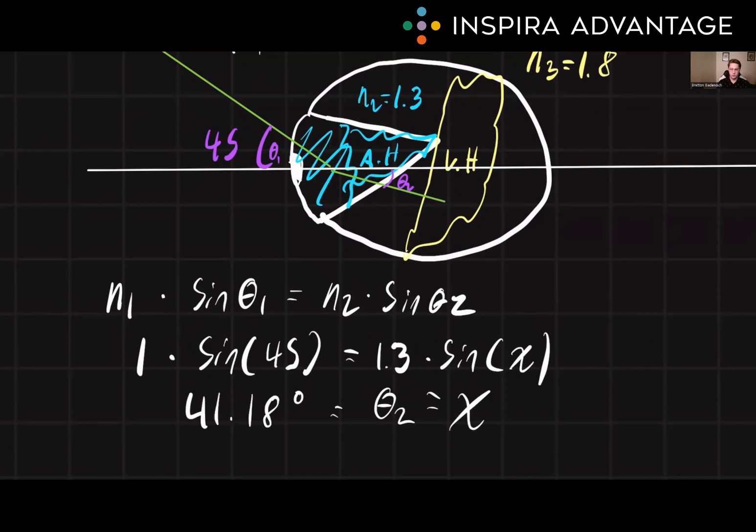And this is the answer to our solution. So the angle of refraction when the light passes through the boundary between the air and aqueous humor is 41.18 degrees.